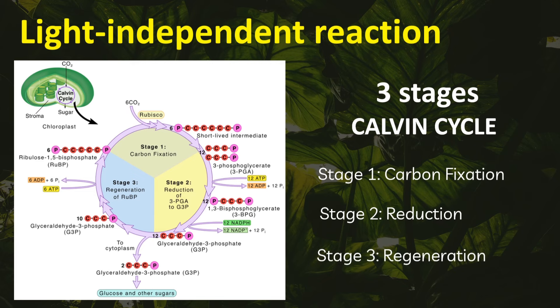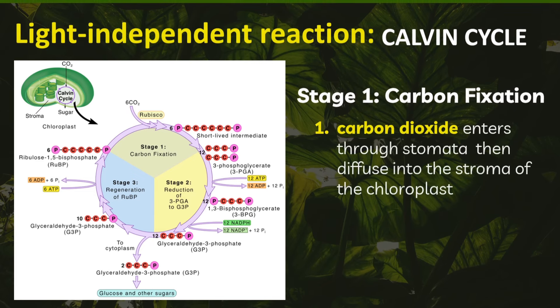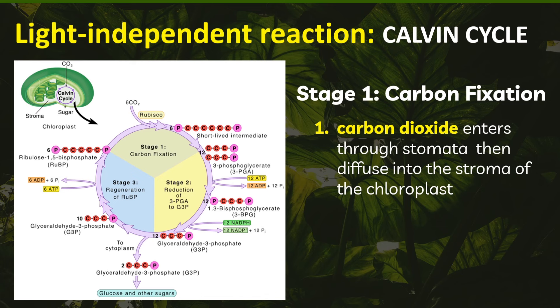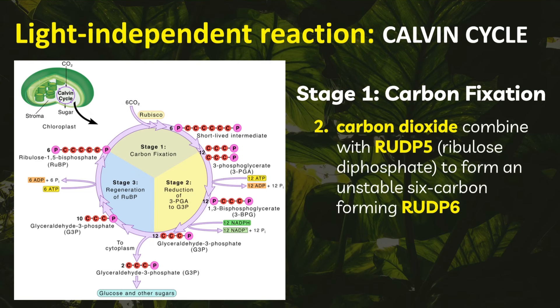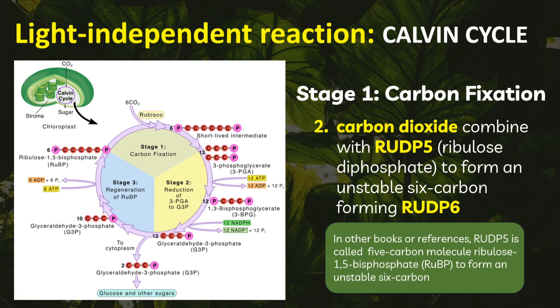Let's start with stage one: carbon dioxide fixation. Carbon dioxide enters through the stomata, then diffuses into the stroma of the chloroplast. Carbon dioxide combines with RuDP5, or ribulose bisphosphate, to form an unstable six-carbon compound called RuDP6. In other references, RuDP5 is also called the five-carbon molecule ribulose bisphosphate.